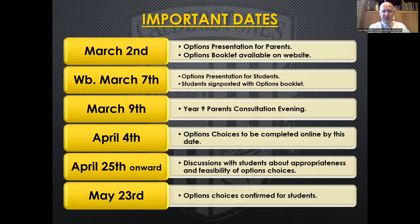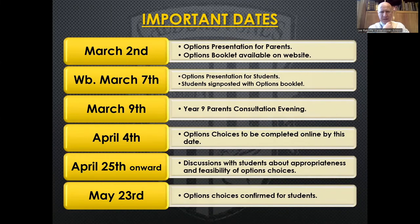On March 9th is our parents' evening, where you'll be able to get the usual progress update on your child and how they've been doing in each subject this year. You'll also be able to ask questions and get advice from subject teachers as to whether a specific subject would be a good choice for your child. On April 4th, that is the deadline by which option choices need to have been completed — everything happens online, and you'll be sent that information in the next couple of days.